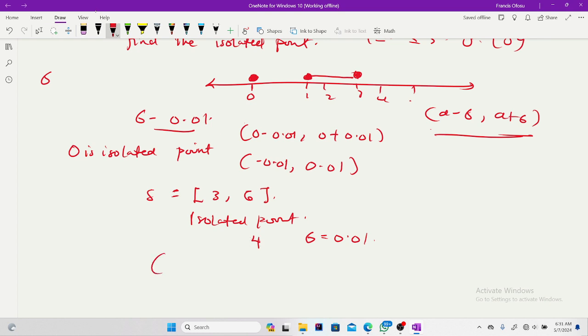Choosing a small radius delta to be 0.01, I'm going to get 4 minus 0.01, 4 plus 0.01. And this should give me 3.99, 4.001. Now with this interval, can you see members of this set within this interval? Yes.